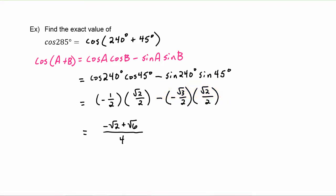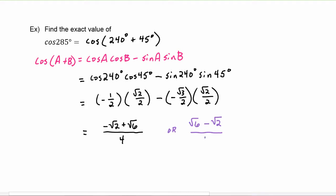If you chose another set of angles, your calculation might have come out in a different order, so it might look like (√6 − √2)/4. Both of these answers are just fine.